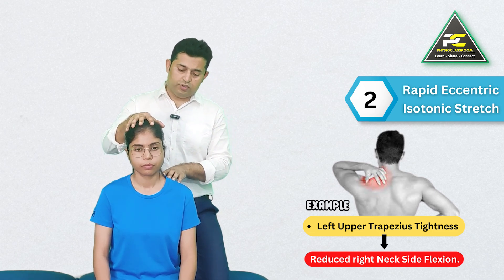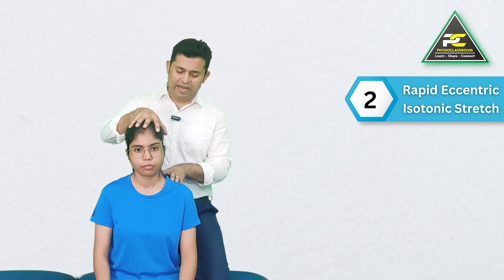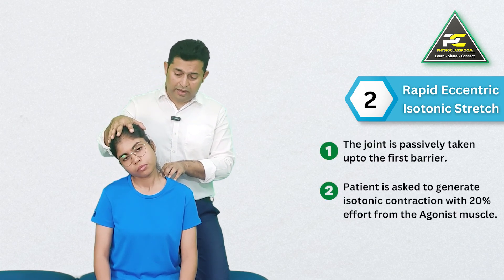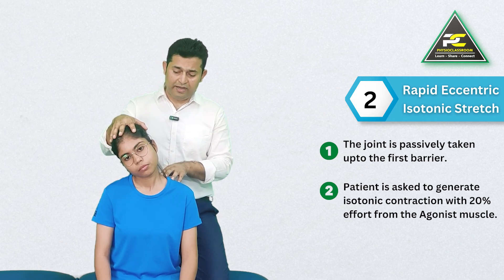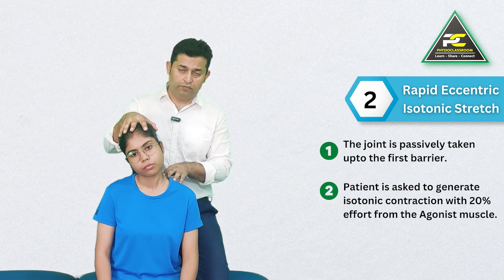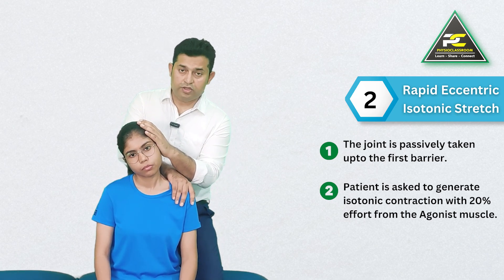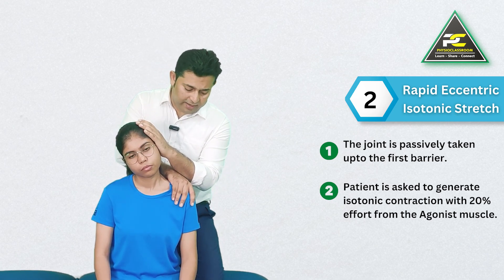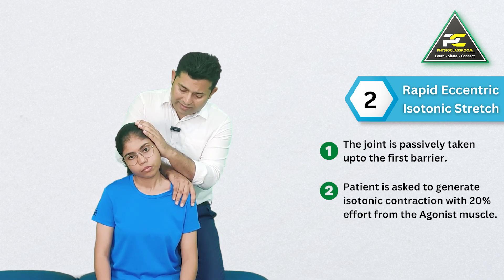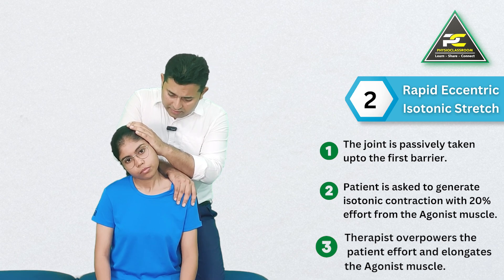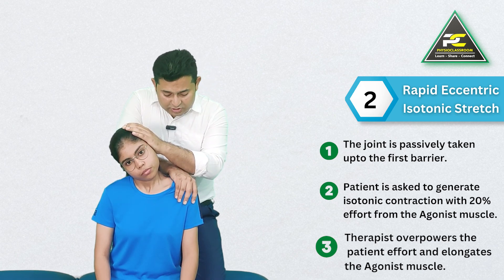The head and neck are positioned to the first perceived barrier — or slightly short of the barrier — with one hand over the shoulder and one hand over the side of the head. The patient is asked with 20% effort to bring the ear and shoulder closer to one another. As the patient intends to shorten the muscle, the therapist overpowers the effort and elongates the left upper trapezius.